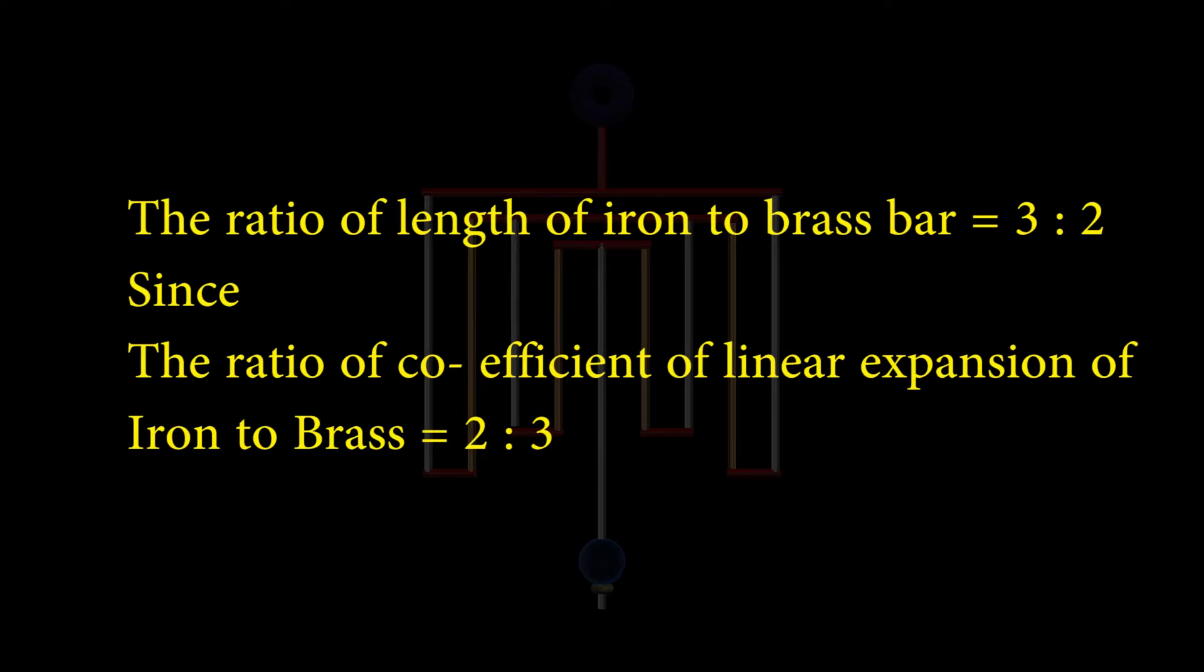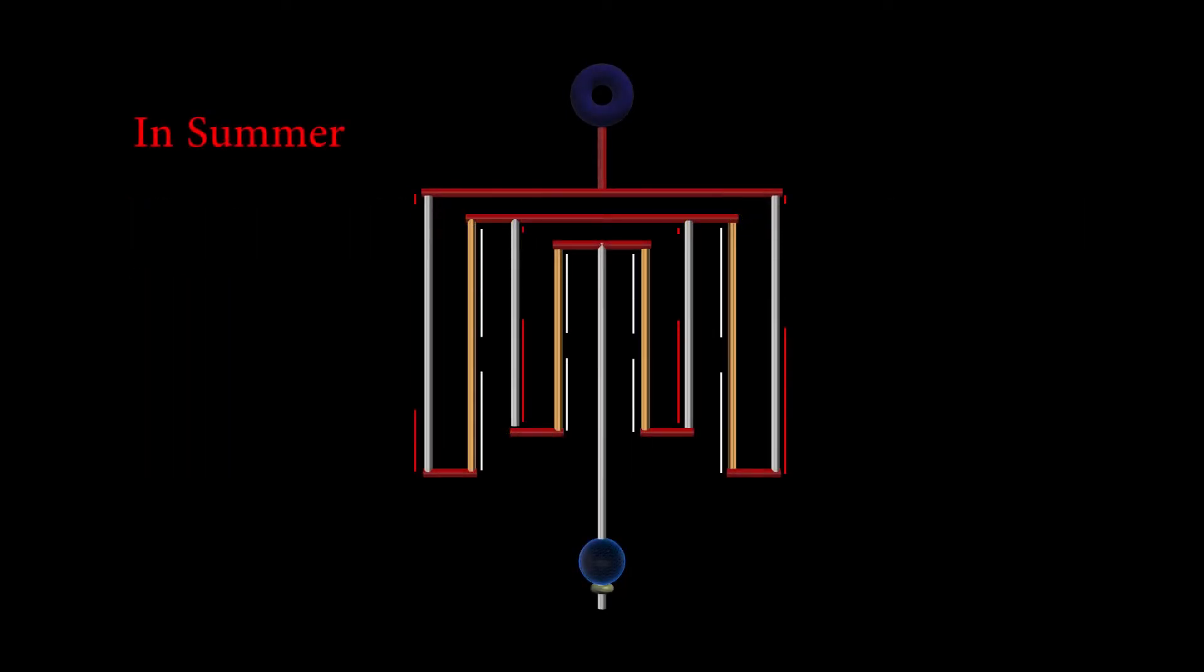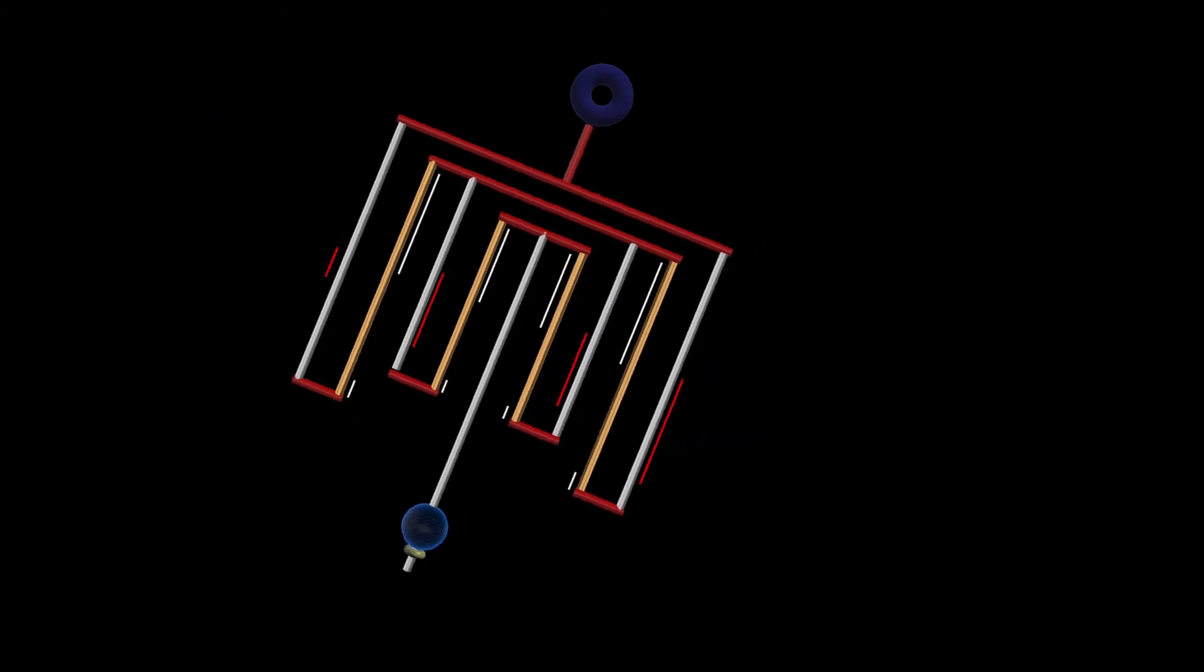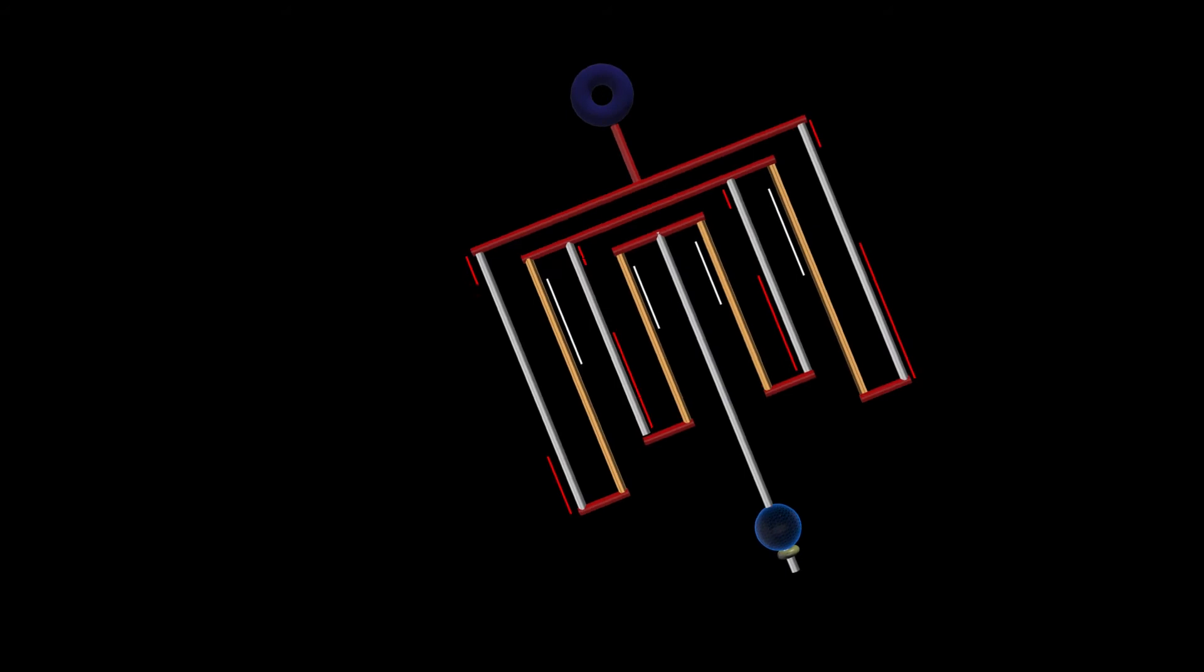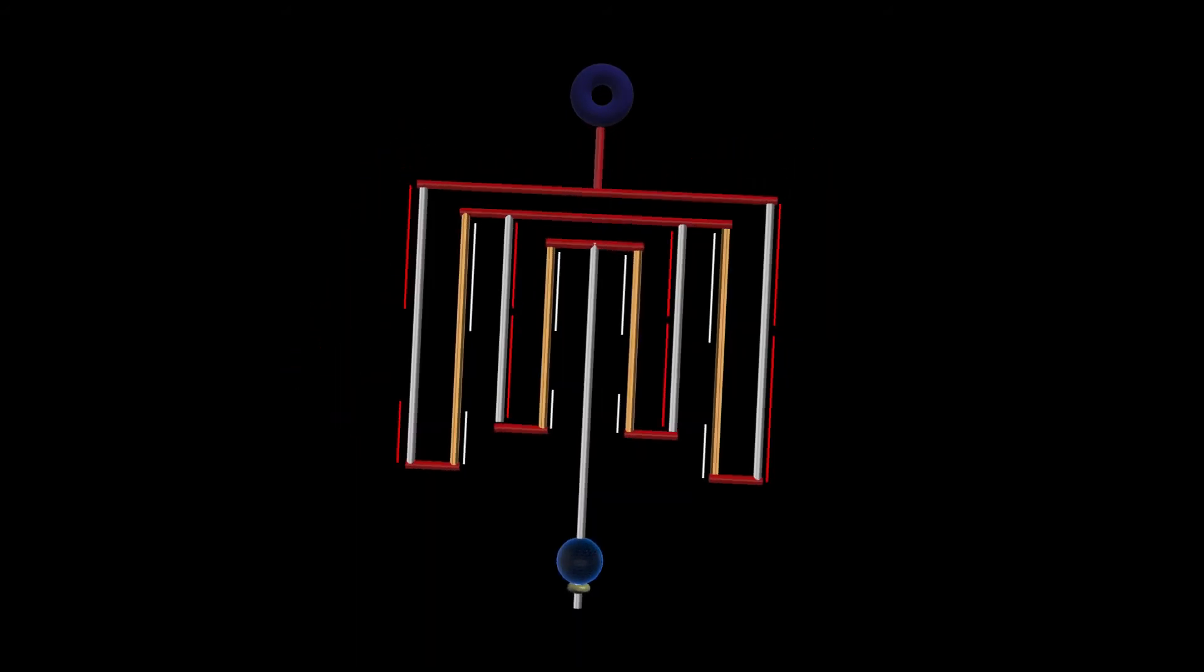Because the coefficient of linear expansion of iron and brass are in the ratio of 2 is to 3. This ensures that, for every 1 degree centigrade rise or fall in temperature, the expansion of iron is counterbalanced with that of brass.